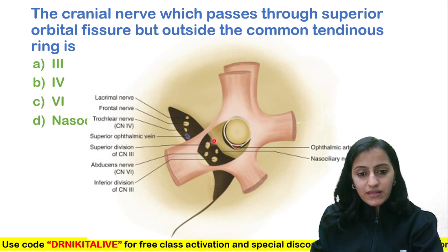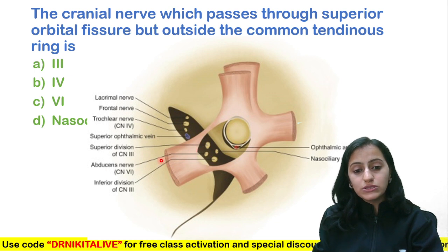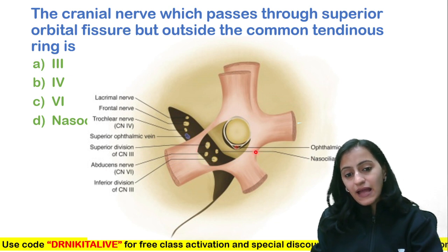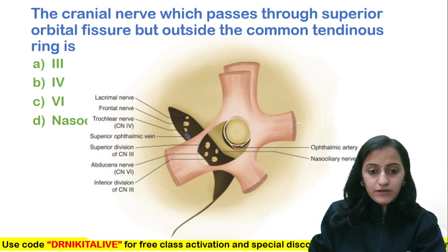Within the common tendinous ring, we can see the superior and inferior divisions of the third — that is, the oculomotor nerve — and the abducent nerve, and we have the nasociliary nerve.